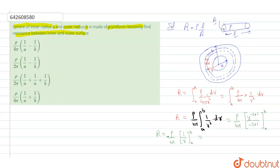This minus is multiplied inside and 1 upon B minus 1 upon A becomes 1 upon A minus 1 upon B. We write directly rho upon 4 pi and we get the value as 1 upon A minus 1 upon B as negative is multiplied inside it.